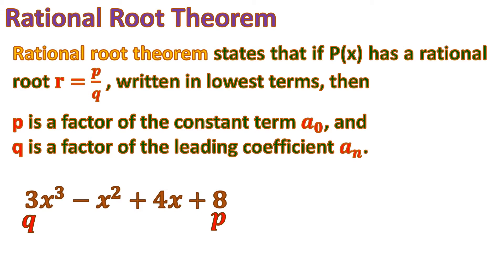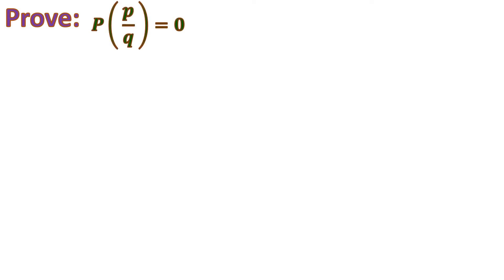Before using the theorem, since this is a theorem we need to prove it so we can be sure it is true for all polynomial expressions. The proof begins with the given that p/q is a root — meaning the remainder is zero. By the remainder theorem, if we replace x with p/q, then p(p/q) = 0. The goal is to show that p divides a₀ and q divides aₙ.